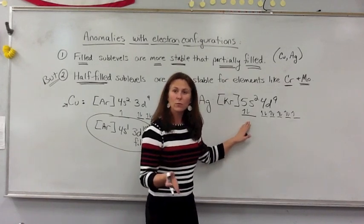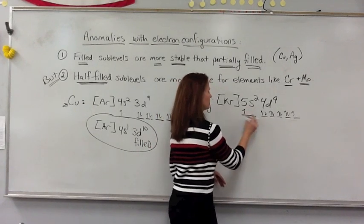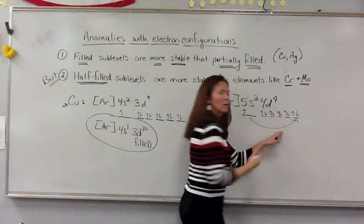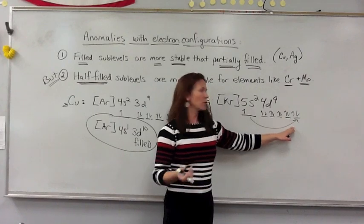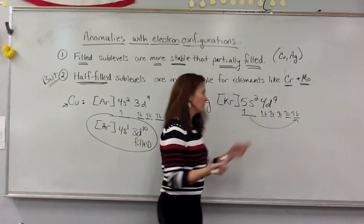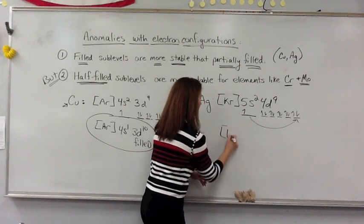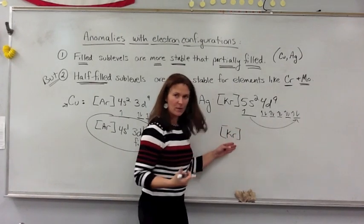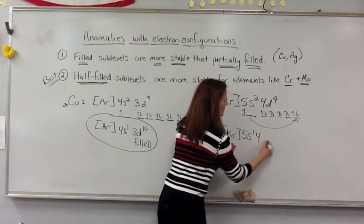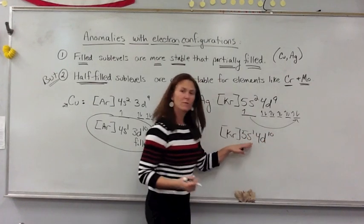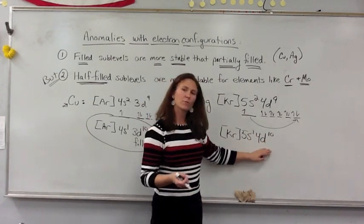So silver will take one electron out of the 5s and fill the 4d orbital to make a more stable configuration, leaving the final configuration krypton in brackets, 5s with one electron, and 4d10.